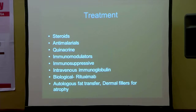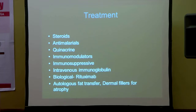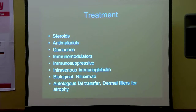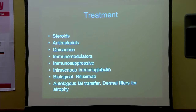Immunosuppressives like azathioprine, methotrexate, and cyclophosphamide can also be used, but are mainly valuable when the patient has SLE. Intravenous immunoglobulin has also been used in patients with lupus profundus and SLE. Rituximab, a biologic agent, has been used as well — a case report noted clinical and systemic improvement after two infusions. For the chronic atrophy that results from lupus profundus, multiple therapies have been used including autologous fat transfer and dermal fillers.